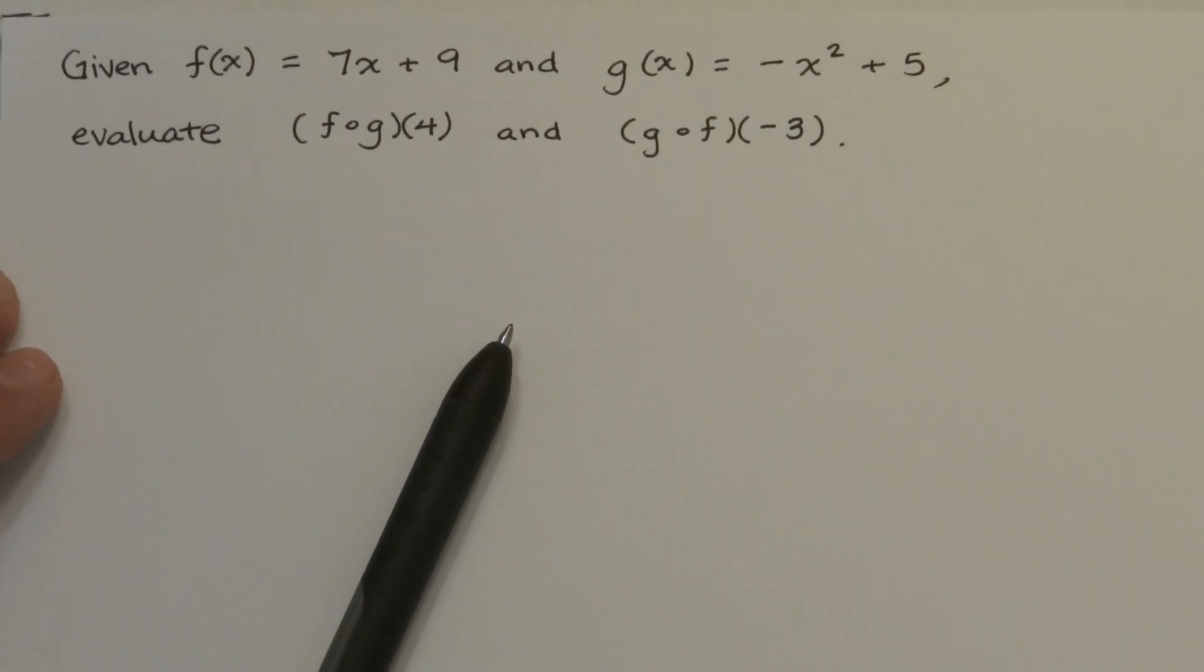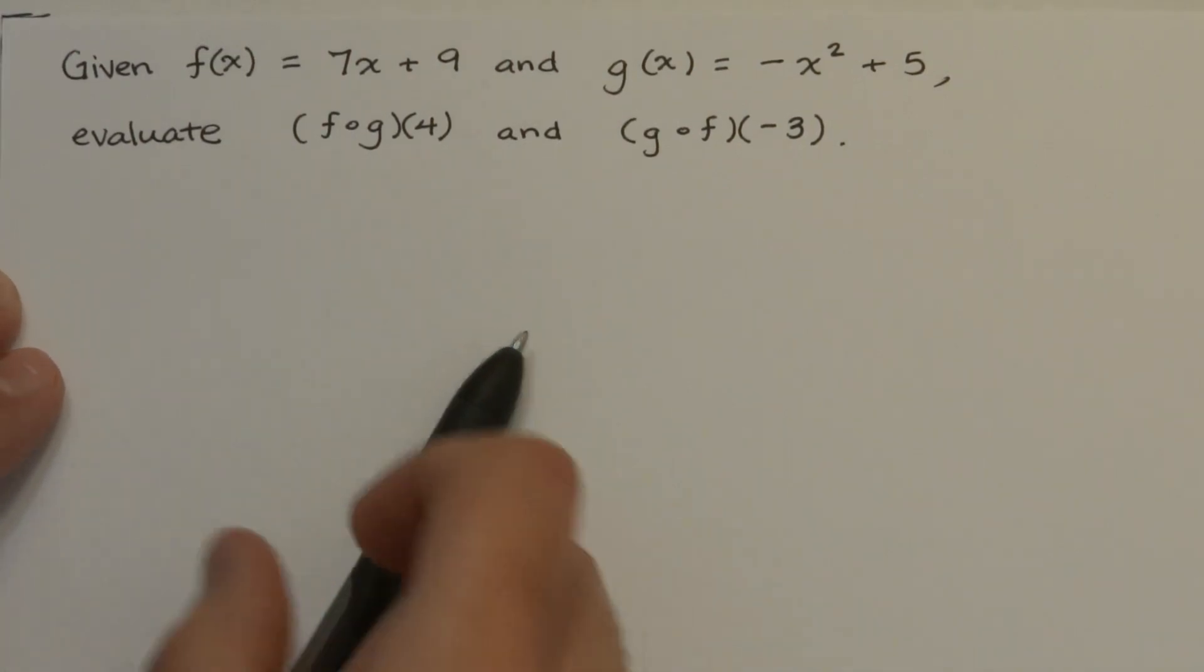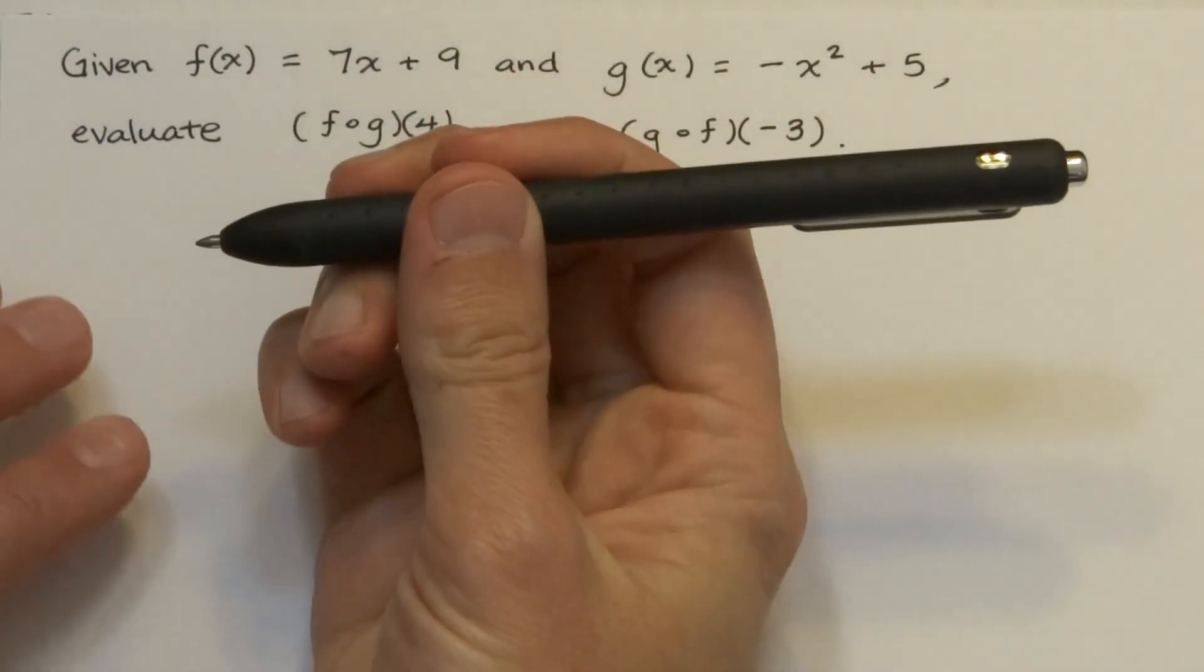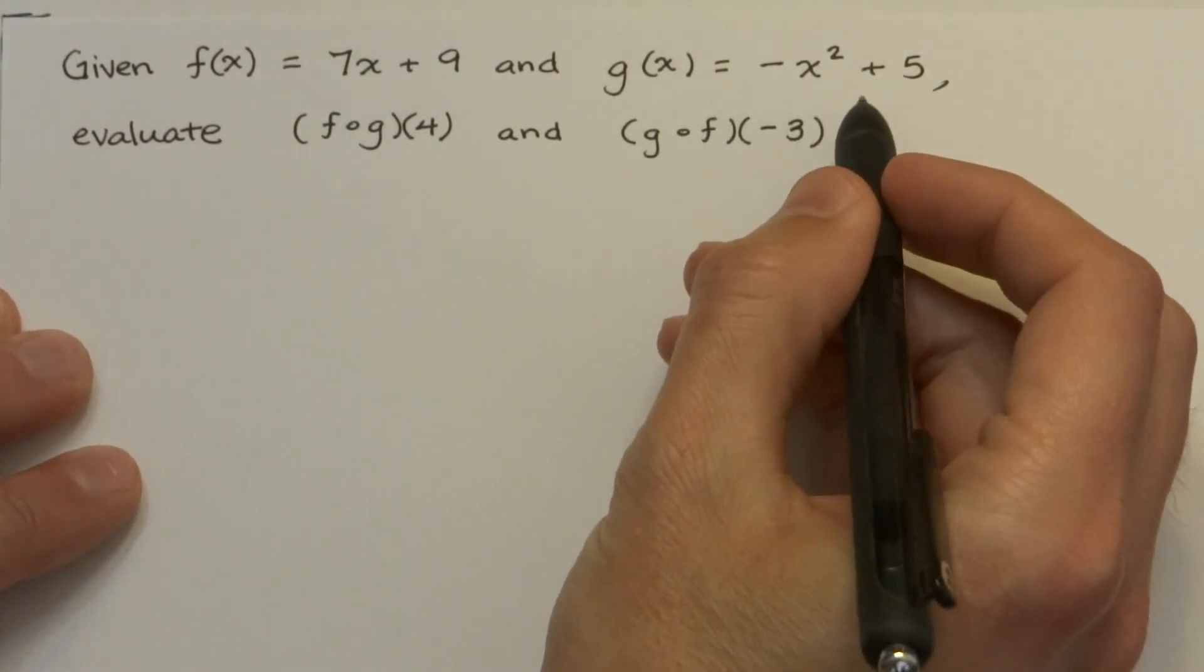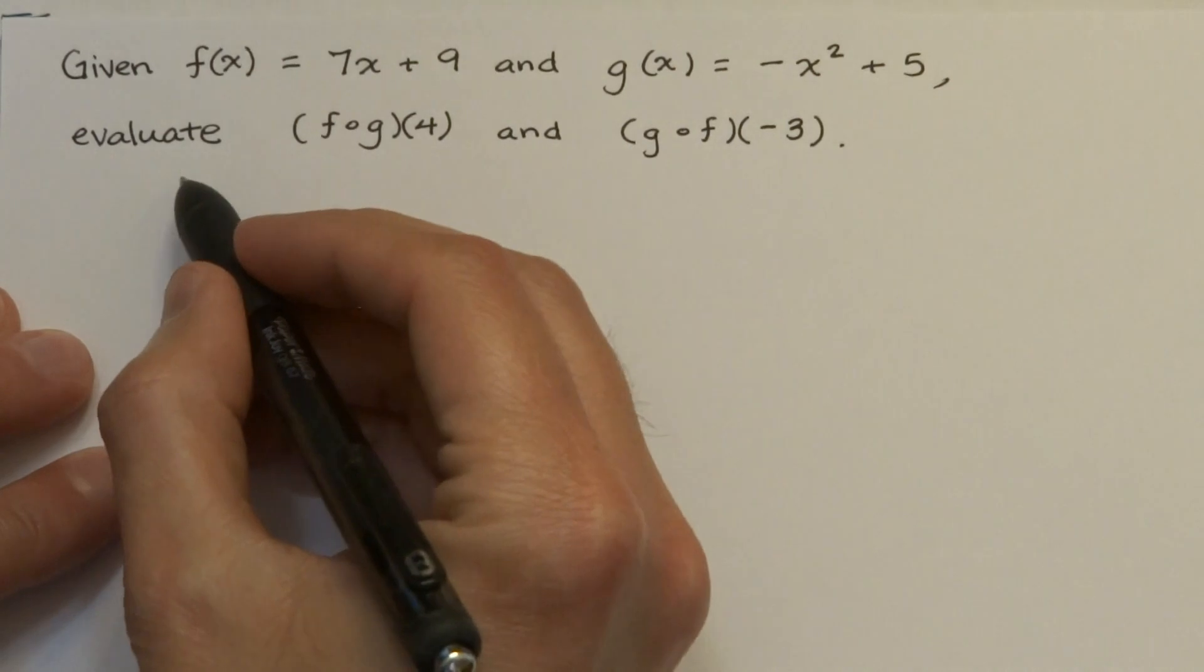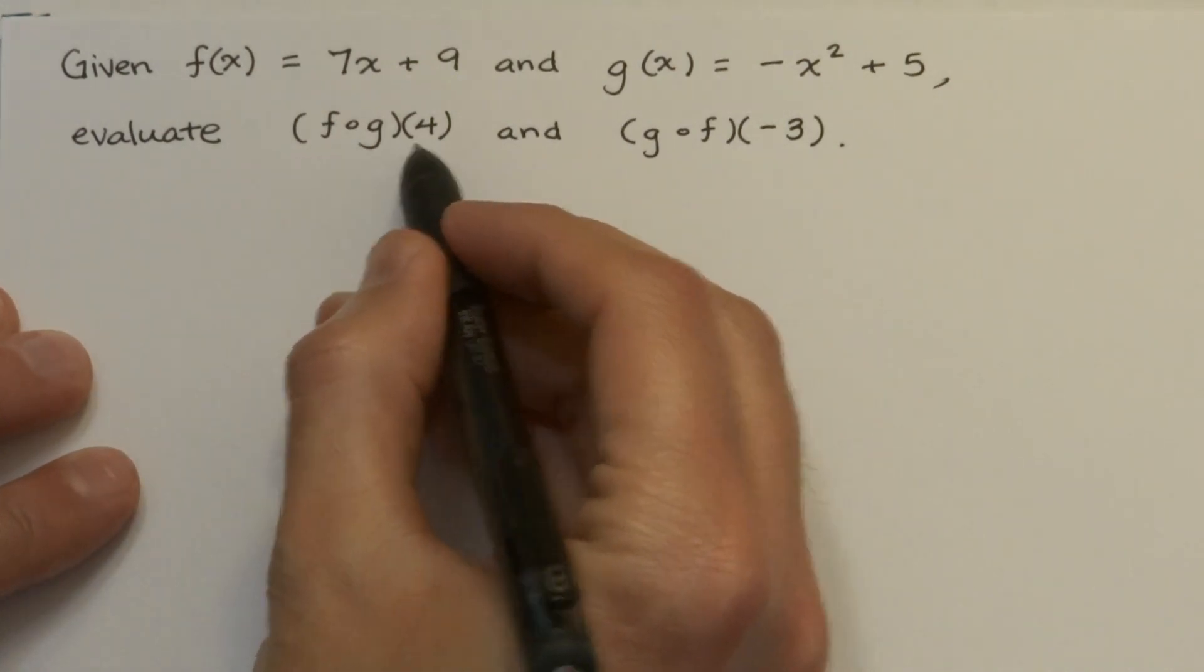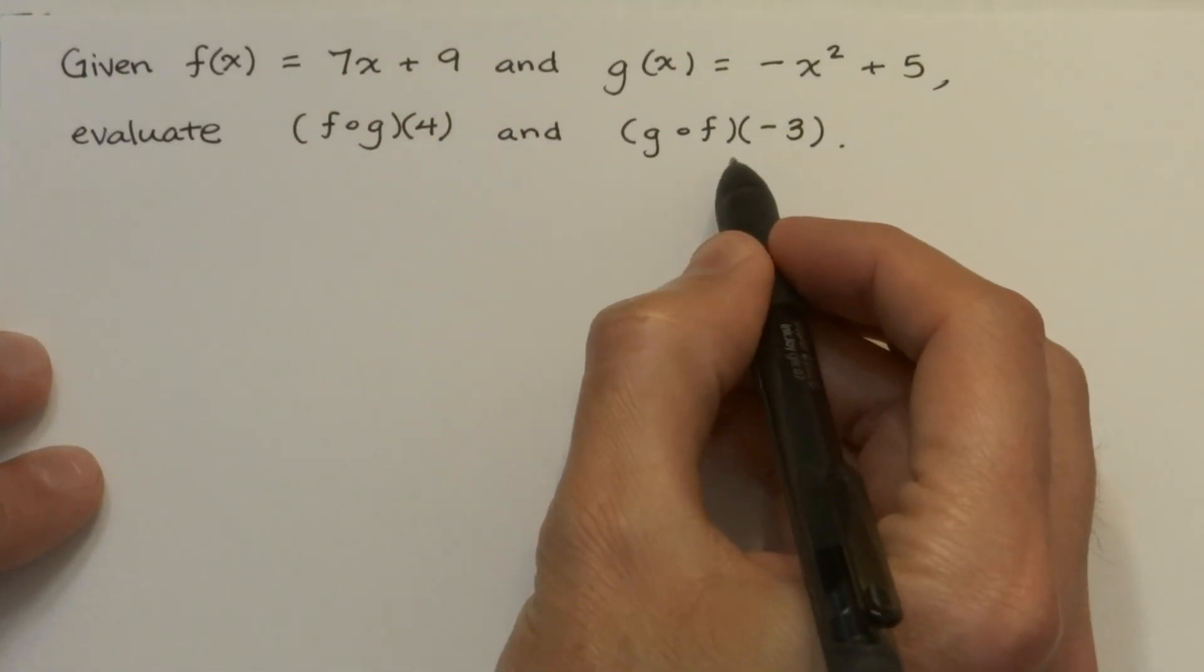Alright, so in this problem you're given two functions: f of x equals 7x plus 9 and g of x equals negative x squared plus 5. We need to evaluate their compositions, f of g of 4 and g of f of negative 3.